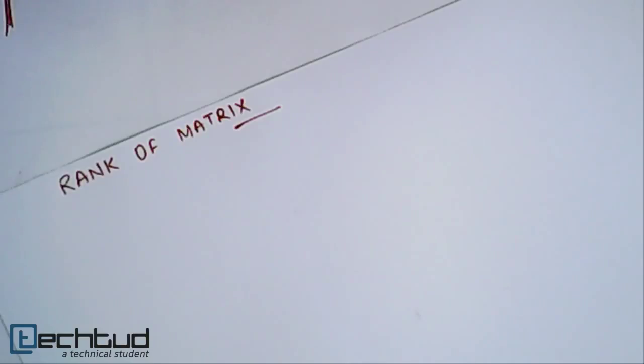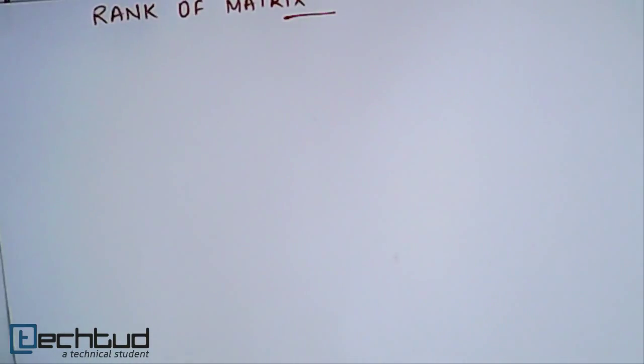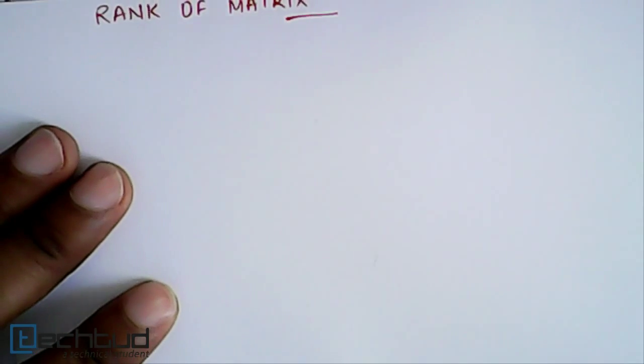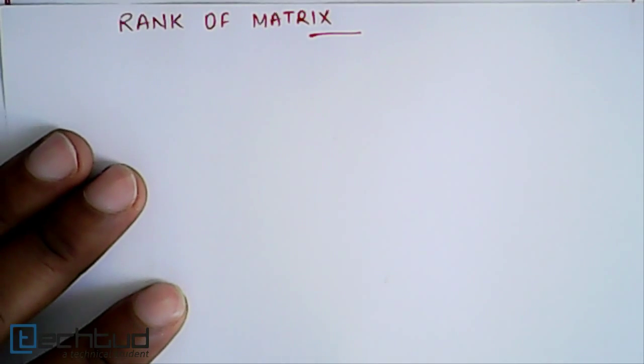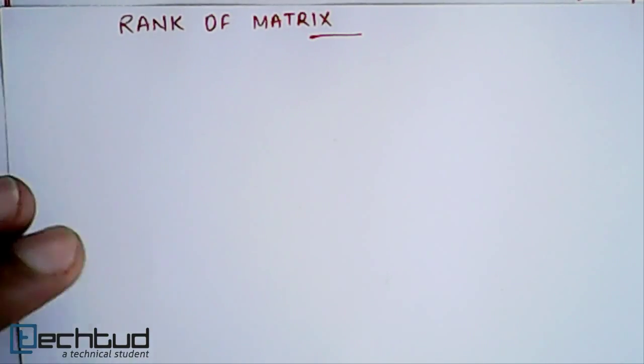Let's get started. Rank of matrix basically shows how many row vectors or column vectors which are independent exist in the matrix.